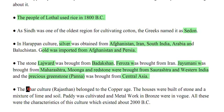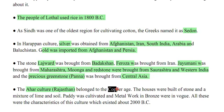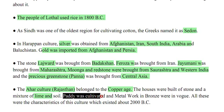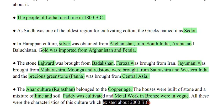The Aar culture in Rajasthan belonged to the copper age. Houses were built of stone and a mixture of lime and soil. Paddy was cultivated and metal work in bronze was in vogue — all characteristics of this culture which existed around 2000 BC.